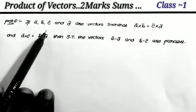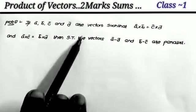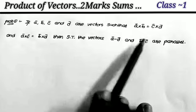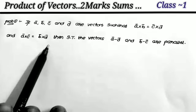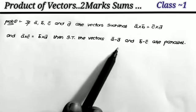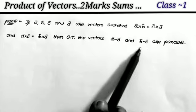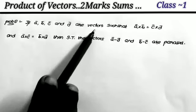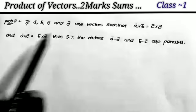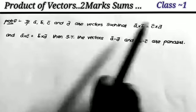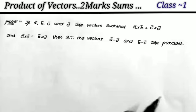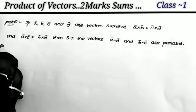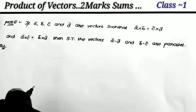The first problem: if a, b, c, d are vectors such that a cross b equals c cross d, and a cross c equals b cross d, then show that the vectors (a minus d) and (b minus c) are parallel. Four vectors are given with two conditions, and we have to show that these two vectors are parallel.